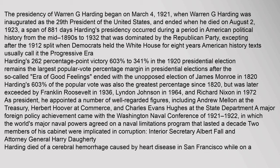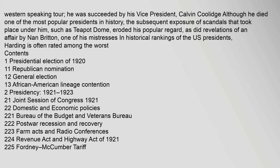Two members of his cabinet were implicated in corruption: Interior Secretary Albert Fall and Attorney General Harry Doherty. Harding died of a cerebral hemorrhage caused by heart disease in San Francisco while on a Western-speaking tour. He was succeeded by his vice president, Calvin Coolidge. Although he died one of the most popular presidents in history, the subsequent exposure of scandals, such as Teapot Dome, eroded his popular regard, as did revelations of an affair by Nan Britton, one of his mistresses.